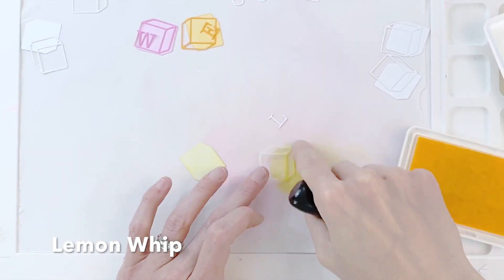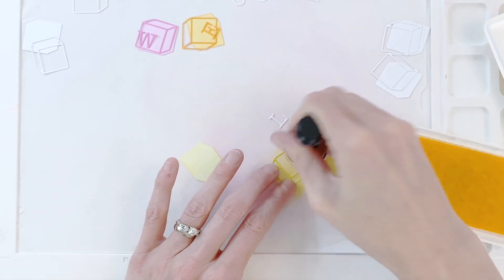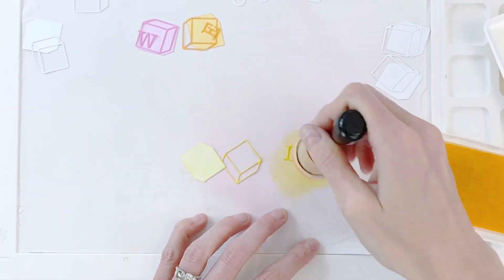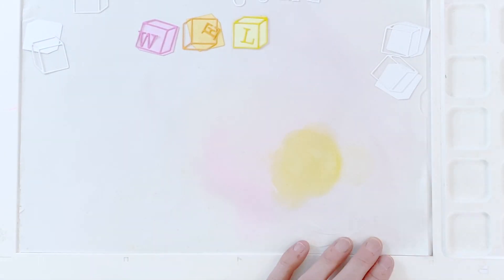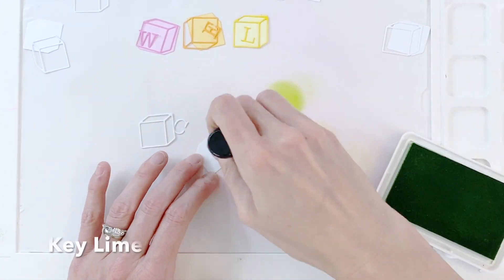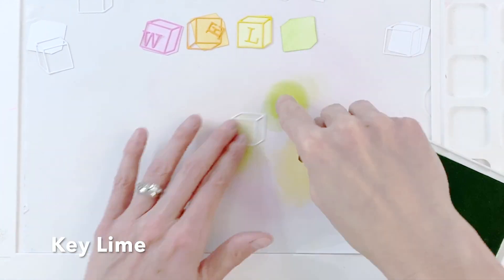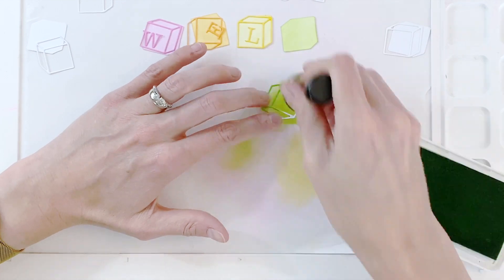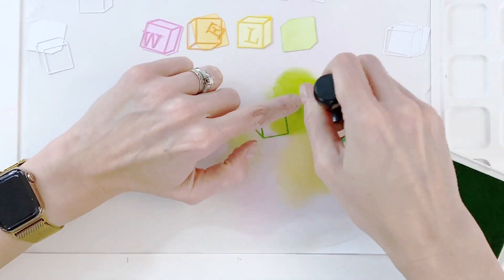Moving on to a yellow here, lemon whip. All the colors that I'm using are on screen so you can follow along. I'm just going to repeat this process until I have all of my colors or all of my blocks being blended out. I did pick a rainbow of colors here. Seven colors in total because there are seven letters in welcome.